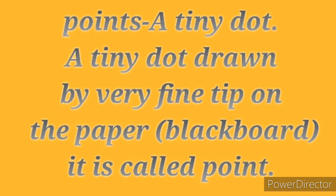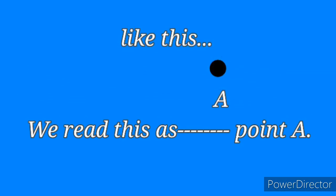A point is a tiny dot drawn by a very fine tip on paper or a blackboard. We draw the point on the blackboard and write its name using a capital letter of the alphabet, such as A, B, or C. We read these as Point A, Point B, Point C.